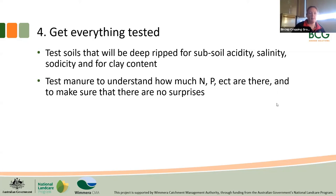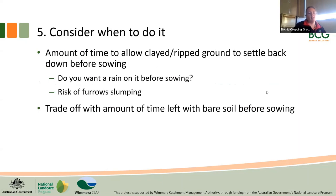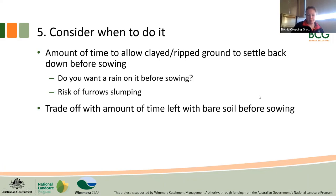Something else to consider is when to do it. One of our struggles at Lubeck was that we spread the clay and manure and then sowed back into it the very next day, so it didn't have any chance to settle down — everything was still incredibly loose, making it more likely to slump. Consider how early on you want to rip or clay before sowing, and part of that will depend on which crop type you're choosing. However, the trade-off is that the earlier you deep rip or clay spread, the more chance you have of wind erosion in the time before sowing.